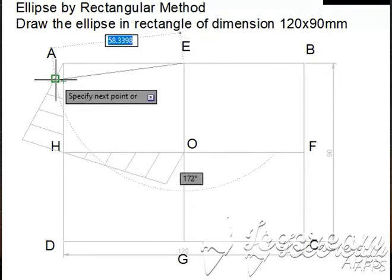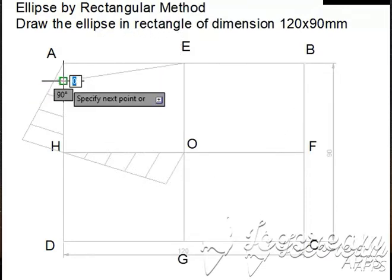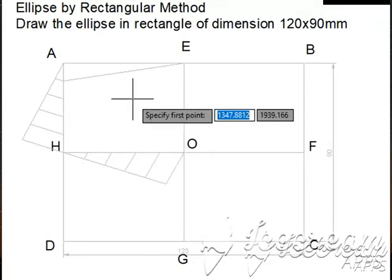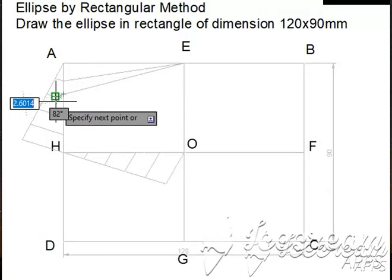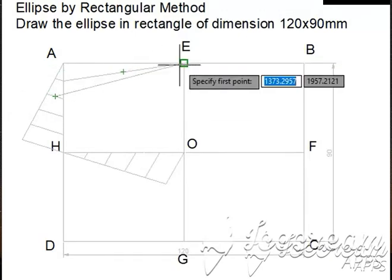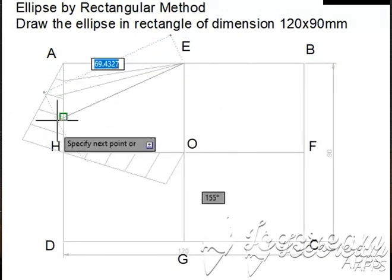Join A and all the vertical points on the AE edge.